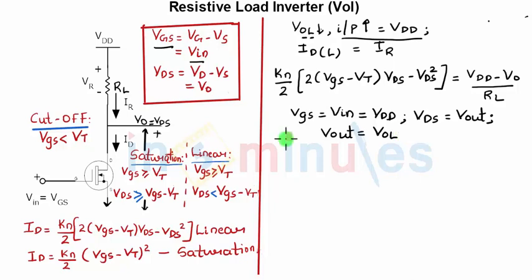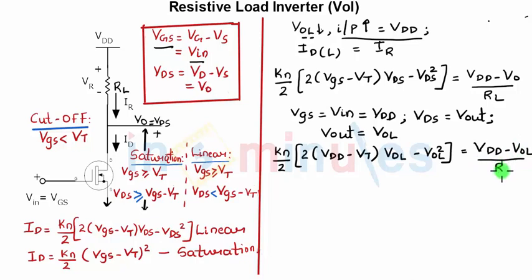So let's quickly do this substitution: this is nothing but KN by 2 times (2(VDD minus VT) times VOL minus VOL squared) equal to (VDD minus VOL) upon RL.